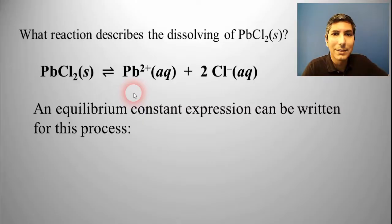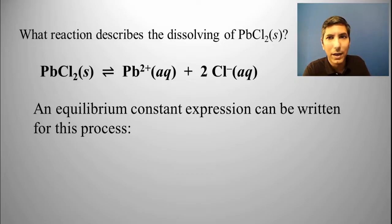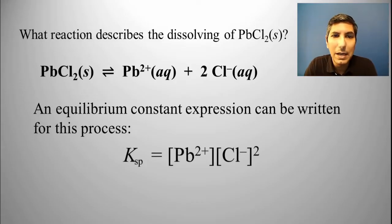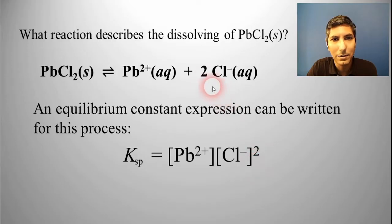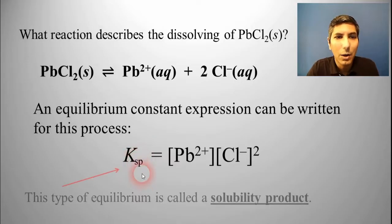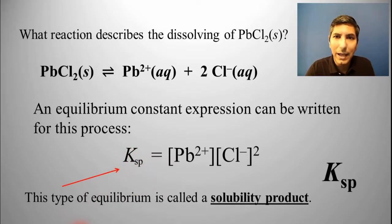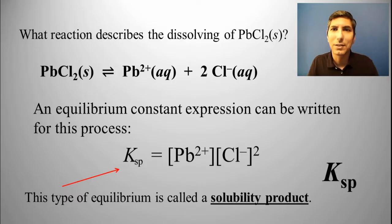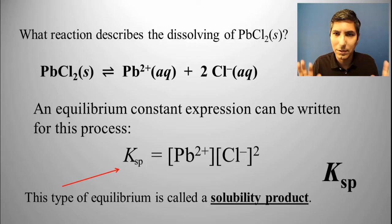We can write the equilibrium constant expression for that process the same way we write one for any reaction: products over reactants raised to the power of the coefficients. So it's the concentration of Pb²⁺ ions times the molarity of the chloride ions squared — since there's a coefficient of 2 — and that equals K. This is a new type of equilibrium constant. This is not Kc or Kp; we call this Ksp. The 'sp' in Ksp stands for solubility product, so Ksp is sometimes referred to as the solubility product constant.